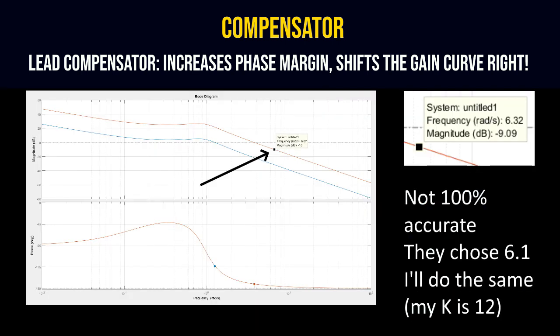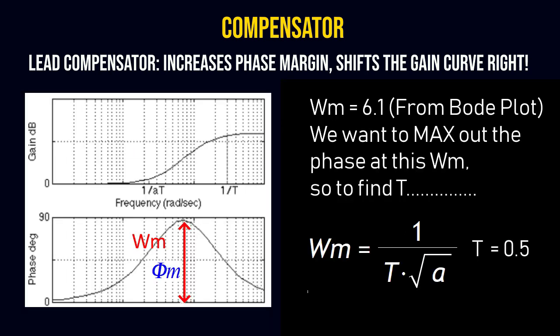On the current Bode plot, find where the upward shift of 10 decibels occurs. This will create a new crossover frequency of 6.1 rad/s. At this frequency on the phase plot, we want to maximize the phase margin to reduce overshoot. Using the formula with ω_m = 6.1 and α = 0.1, we solve for T as 0.5.